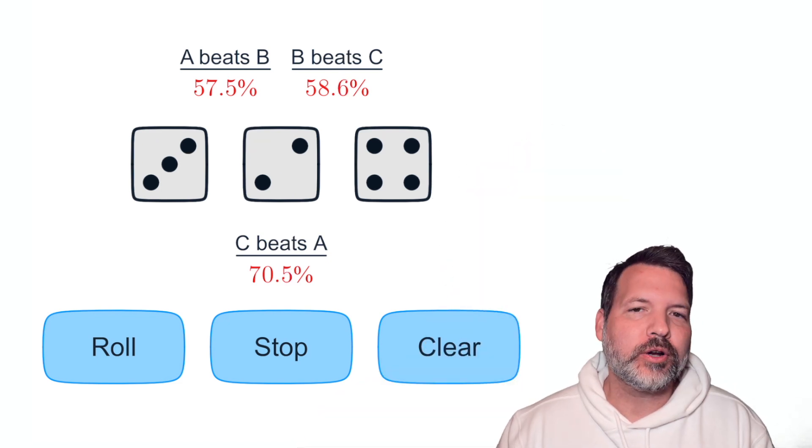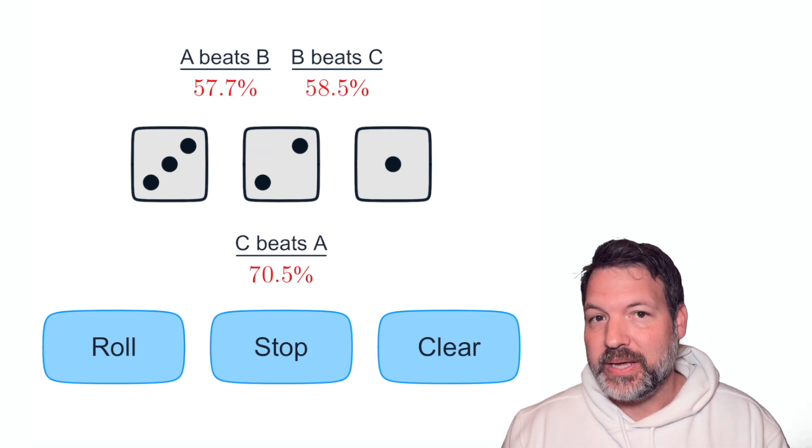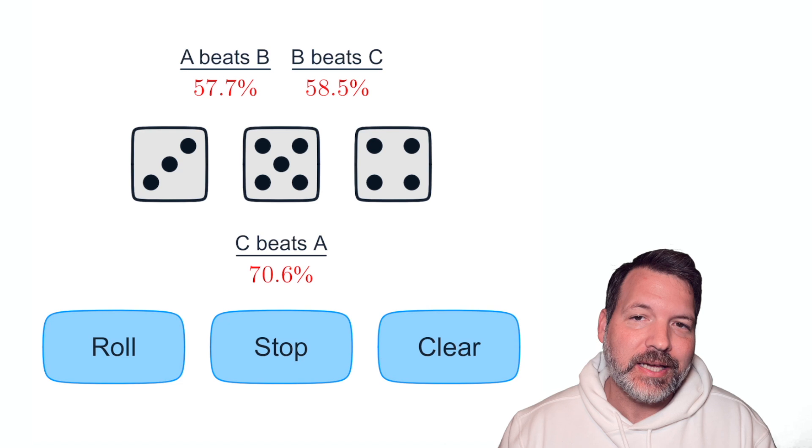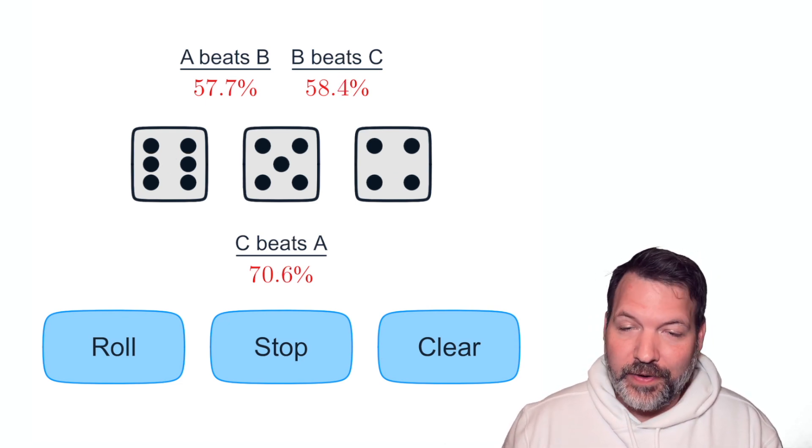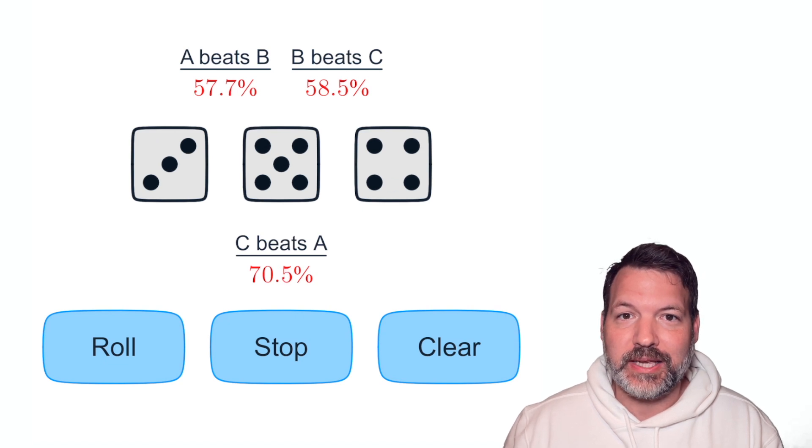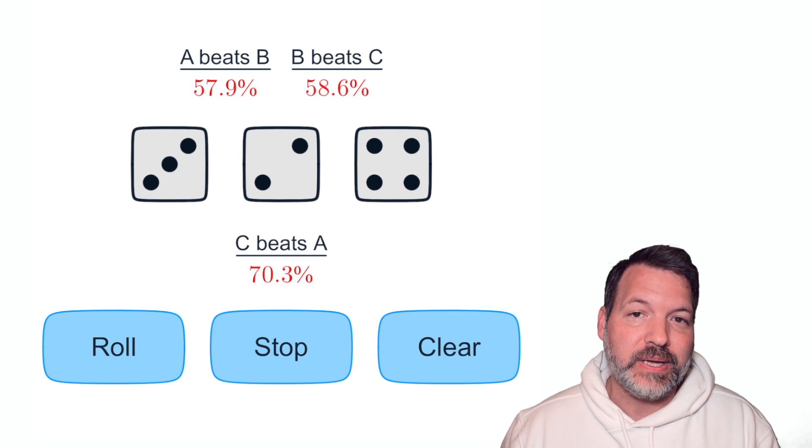Well, if you pick A, I'm actually gonna go ahead and pick C, and I'm gonna end up beating you about 69% of the time. What? How is this possible? This is a case of what are called intransitive dice. Just because A beats B most of the time, and B beats C most of the time, that doesn't necessarily mean that C beats A most of the time. In fact, in this case, you can see C beats A by even more than either A beat B or B beats C.